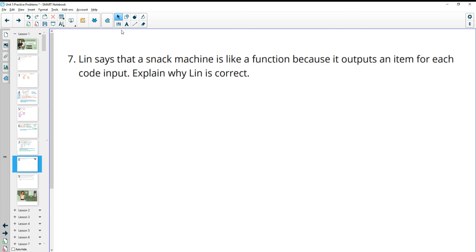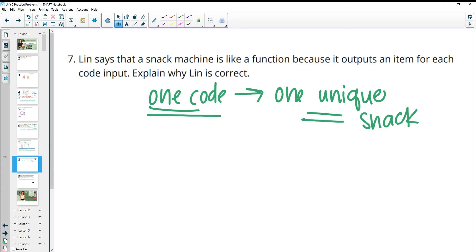Number 7, Lynn thinks a snack machine is like a function because it outputs an item for each code input. So it has outputs for each code, explain why she is correct. And so kind of basically what she said, right? There's one code that goes to one unique snack. So each code gives you a unique snack. You're not typing in the same code and it's giving you, it's picking between snacks. You type in the code, it gives you the snack you asked for.